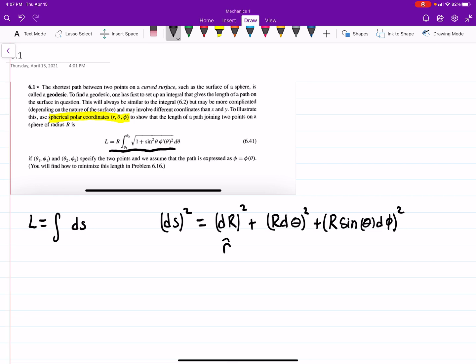There's also an r hat, a theta hat, and a phi hat, but those are unit vectors, so when you square them, you're just going to get one, so I didn't include those.